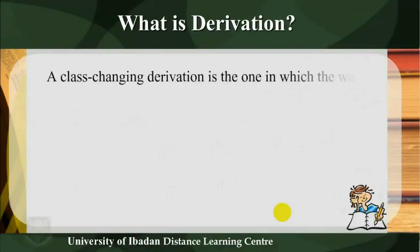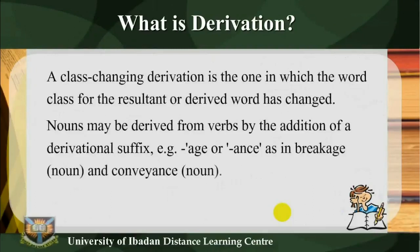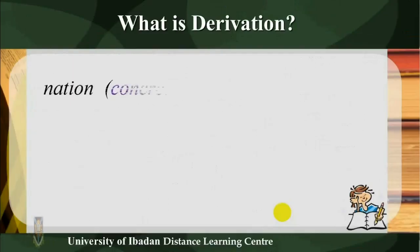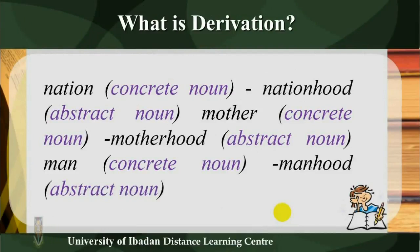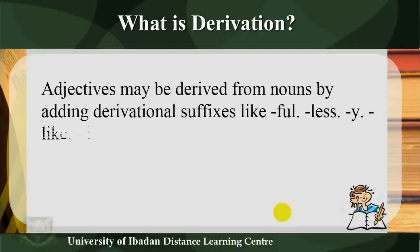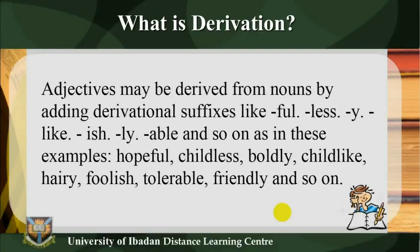Class-changing derivation is the one in which the word class of the resultant or derived word has changed. Nouns may be derived from verbs by the addition of a derivational suffix — for example, -age or -ance as in 'breakage' (noun) and 'conveyance' (noun). Nouns may also be derived from other nouns — for example, 'nation' (concrete noun) becomes 'nationhood' (abstract noun), 'mother' becomes 'motherhood', 'man' becomes 'manhood'. Adjectives may be derived from nouns by adding derivational suffixes like -ful, -less, -y, -like, -ish, -ly, -able, and so on.